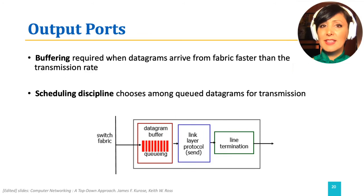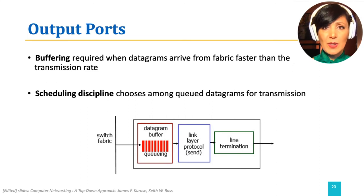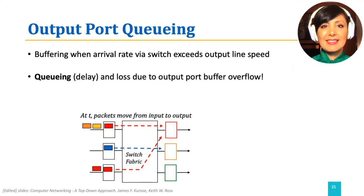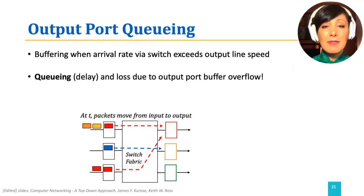What happens at the output ports? Queuing can also happen in the output port buffer before transmitting the packet on the outgoing link, going through link layer and physical layer line termination modules. How to send out the packets from the output queue on the output line is decided by the scheduling discipline at the output port.